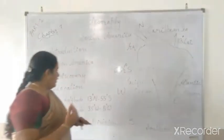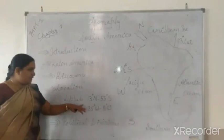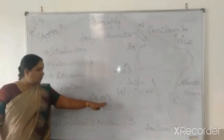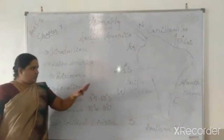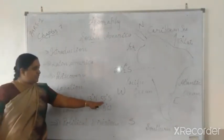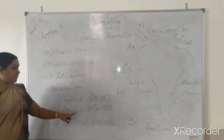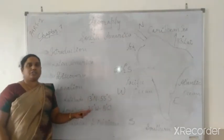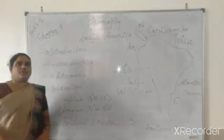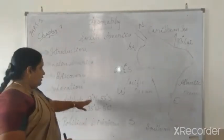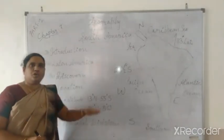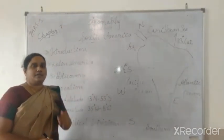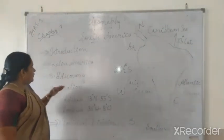The latitude of South America is 13 degrees North to 55 degrees South, and the longitude is 35 degrees West to 81 degrees West. So this continent is located in the western side. Some part is in the northern hemisphere and the remaining part is in the southern hemisphere.